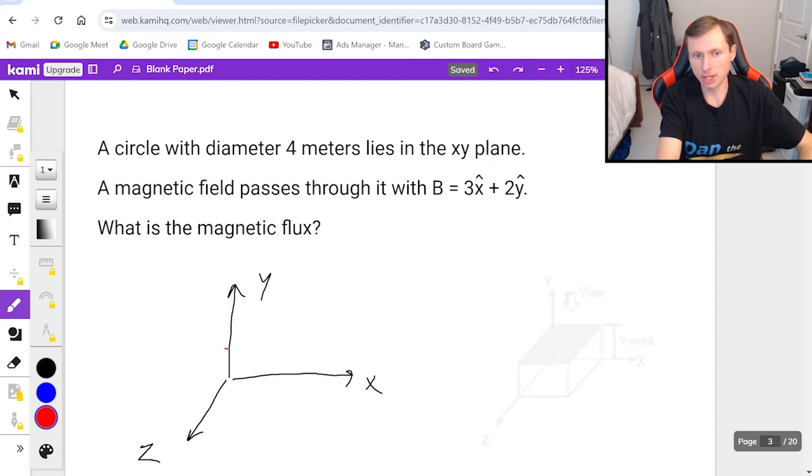In case you're curious, if the circle was in the yz plane, I would try and make it look a little more vertical like that. And if it was in the xz plane, I would try and make it look more horizontal like that. But no, it's in the xy plane, so it's as easy as it gets.